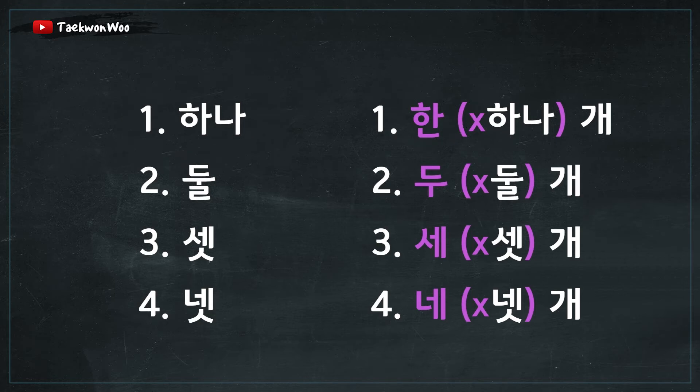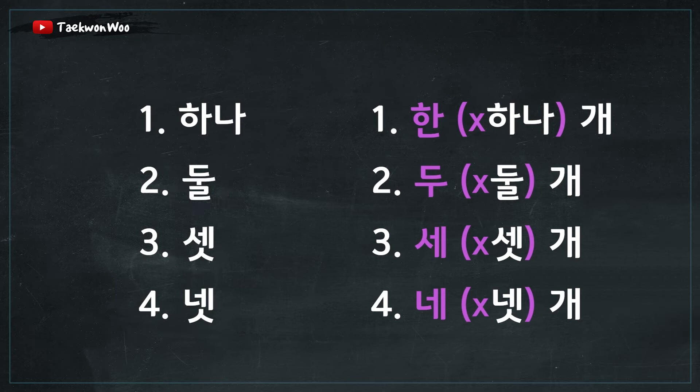In the case of 2, 3, and 4, as you can see, when the number and the counter are articulated, the final consonant — which is 받침 in Korean — has been dropped. As a result, in number 2, the final consonant 리을 has disappeared, so you read 두 개 instead of 둘 개.